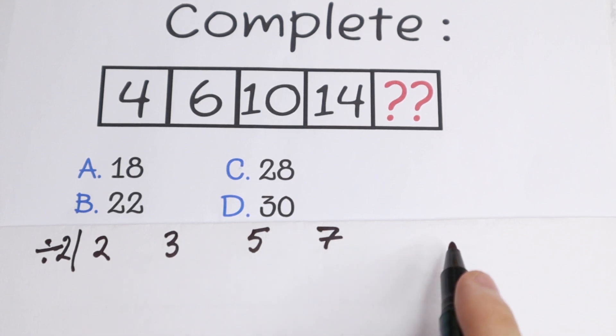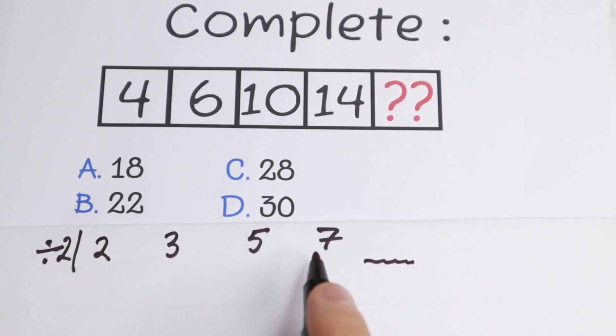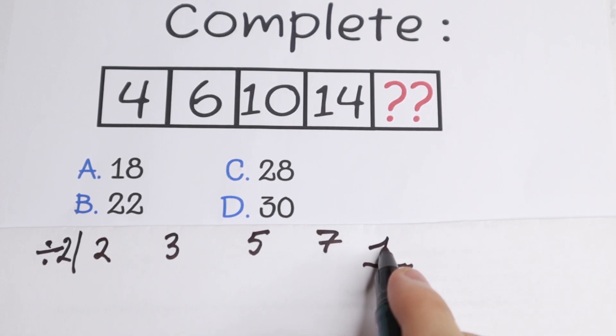Then we have 11, 13, 17, 19. But what will be the next number? Right here as you can see we need to find the next number. What is the number after this 7? Of course after 7 we'll have 11.